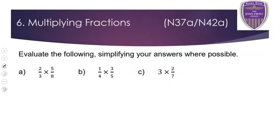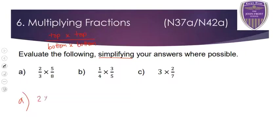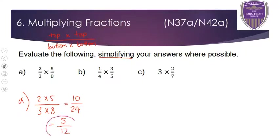For multiplying fractions, don't overcomplicate it — we don't need to make the bottom numbers the same. Just times the top by the top and the bottom by the bottom: numerator by numerator, denominator by denominator. Then simplify if possible. For question A, 2 times 5 on the top, 3 times 8 on the bottom — 2 times 5 is 10, 3 times 8 is 24. They're both even so halve them — simplified answer is 5 over 12.